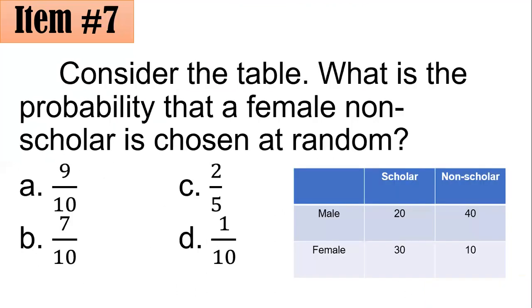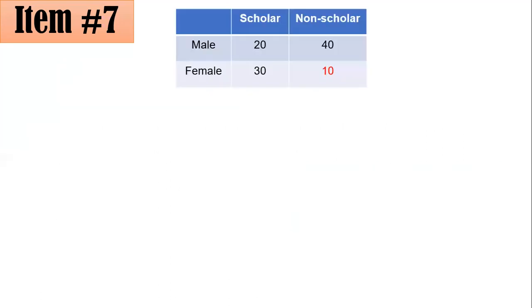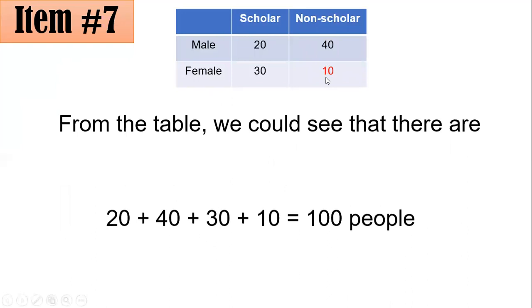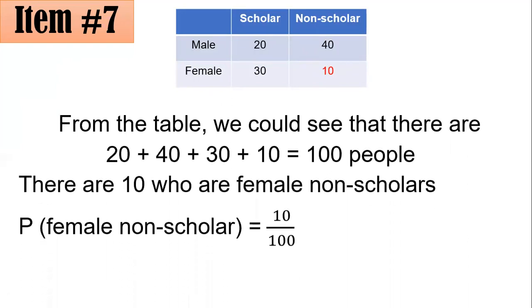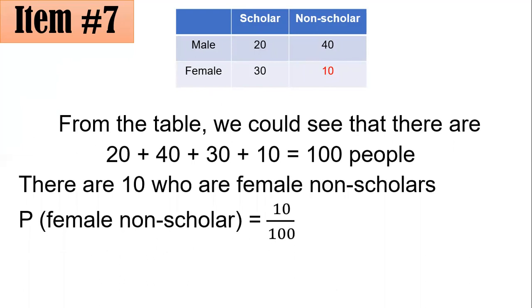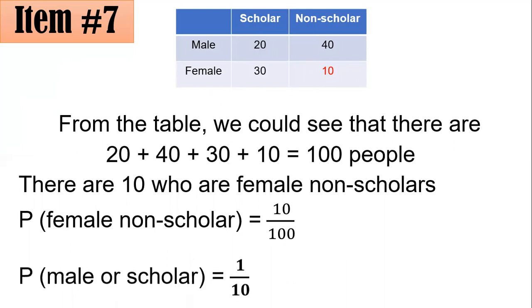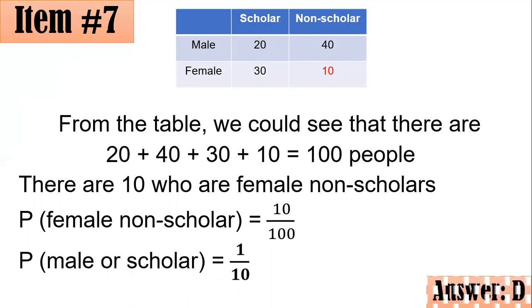Number 7. Using the same table, what is the probability that a female non-scholar is chosen at random? Is it 9/10, 7/10, 2/5, or 1/10? From the table, female non-scholars number 10 out of the 100 people total. Therefore, the probability of getting a female non-scholar is 10/100, and dividing both numerator and denominator by the GCF of 10, we get 1/10. Letter D.